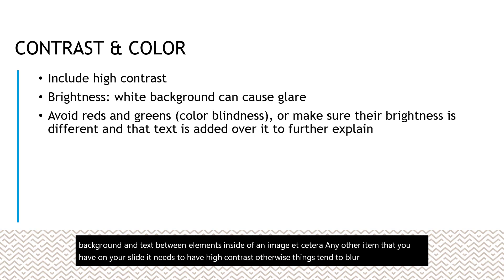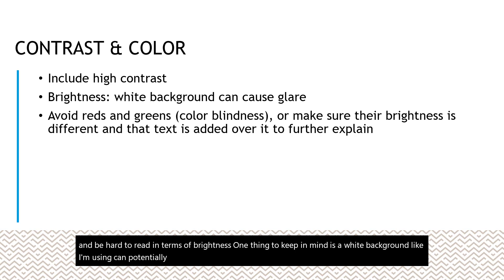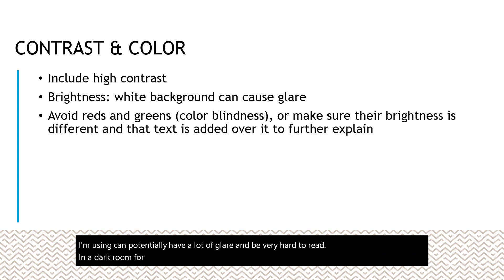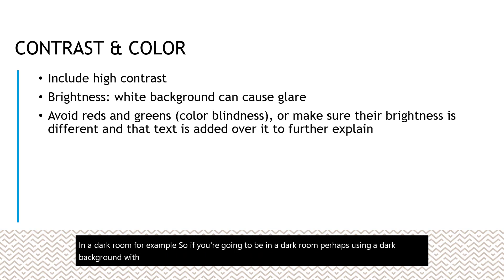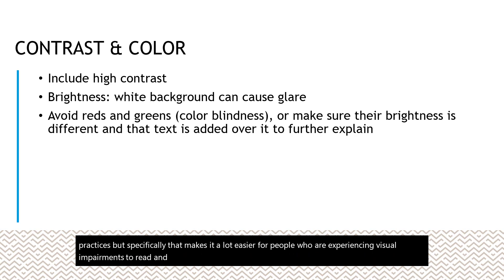Any item on your slide needs to have high contrast; otherwise things tend to blur into each other and be hard to read. In terms of brightness, a white background can potentially have a lot of glare and be very hard to read in a dark room. So if you're going to be in a dark room, perhaps using a dark background with white text overlaid on top would be easier — that makes it a lot easier for people experiencing visual impairments to process the information.